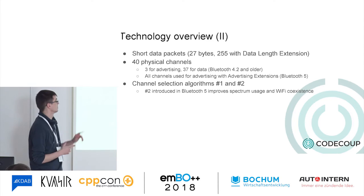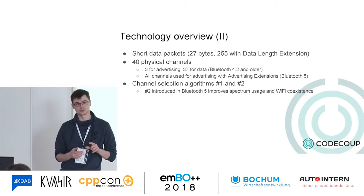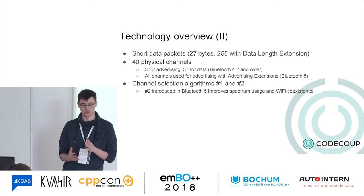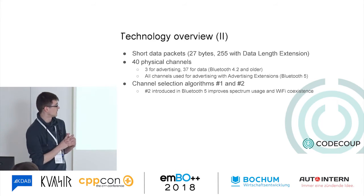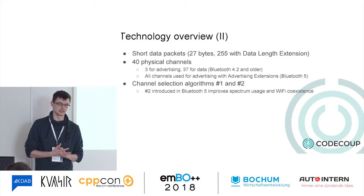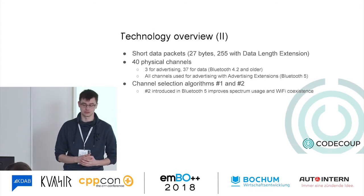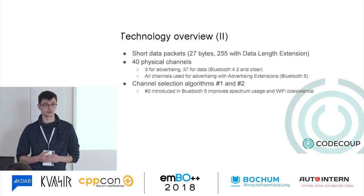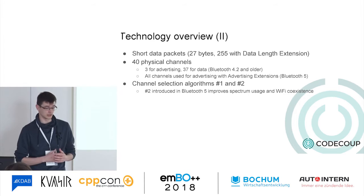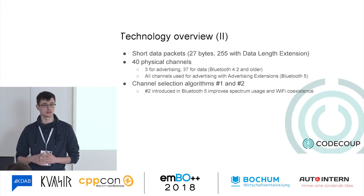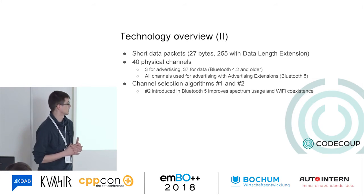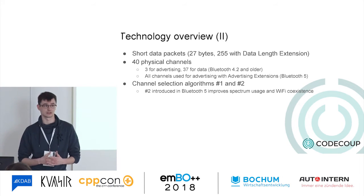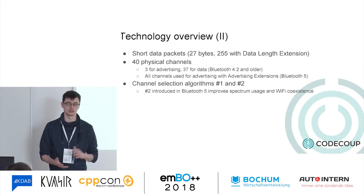The 2.4 GHz spectrum is divided into 40 physical channels. Three of them are used for advertising — the process of one device advertising itself to other devices. Communication happens on the rest. With Bluetooth 5, advertising extensions basically extended the advertising feature so it can use all the data channels available. In Bluetooth 4, the 32 remaining channels were used only during a connection. Bluetooth 5 also has a new channel selection algorithm that improves coexistence with Wi-Fi and makes better use of the radio.